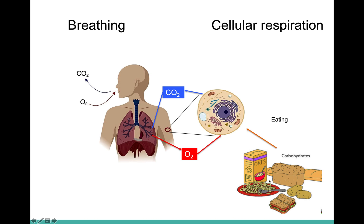We eat food in order to power the energy that we need in our bodies to function every day. What happens to this food? Our body breaks it down into small pieces, and then our individual cells take up these components. Using cellular respiration, they transform the energy present in these food molecules and turn it into another form of chemical energy called ATP. In order for our cells to do this transformation, they need oxygen — that's one of the very important uses of the oxygen that we breathe in.